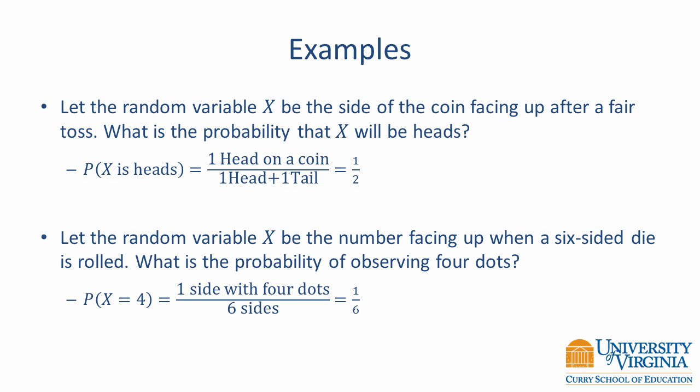Consider two examples. Let the random variable X be the side of the coin facing up after a fair toss. The total number of events is 2, one heads and one tails, and the number of events of interest is 1. Therefore, the probability of tossing a head is 1/2. Now let X be the number facing up when a six-sided die is rolled. There is only one way to roll a 4 on a six-sided die, so the probability is 1/6. These examples give the probability of a single event; however, we often would like to know about all possible events and the probability of observing each one. For this information, we need a probability distribution.